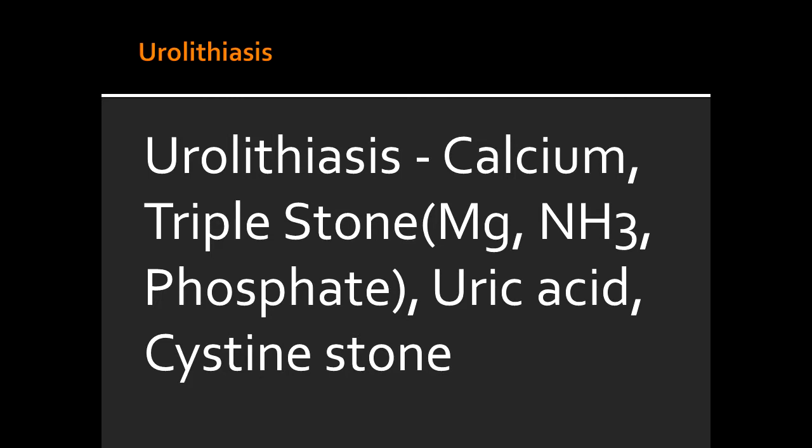Which stones precipitate in alkaline urine? The stones that precipitate in alkaline urine include calcium stones and also the triple stones, which are the magnesium ammonium phosphate stones.